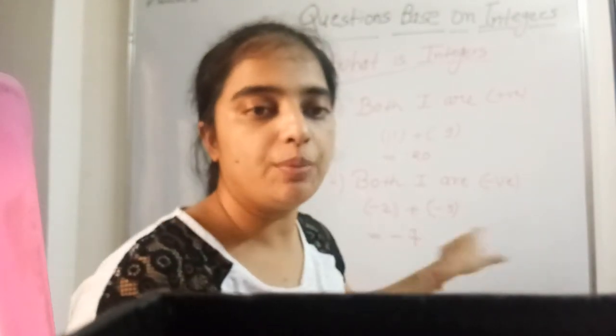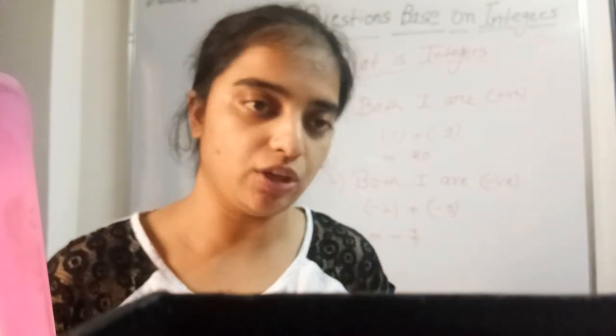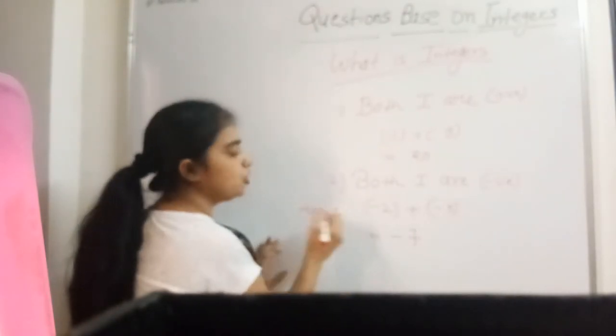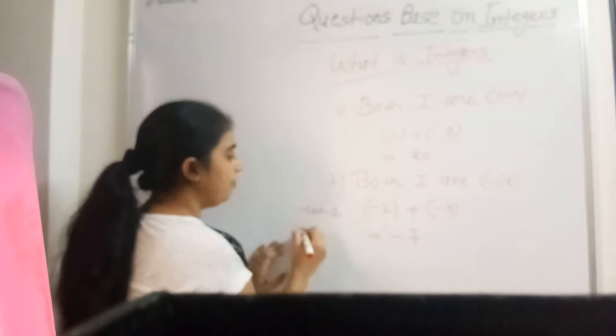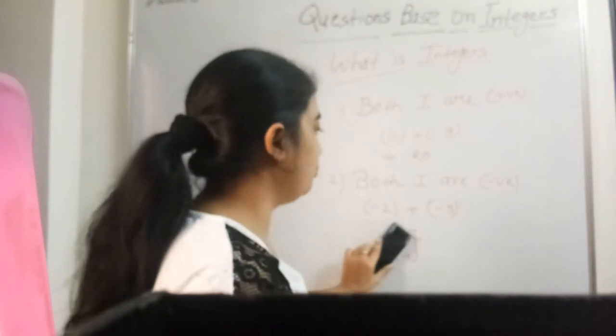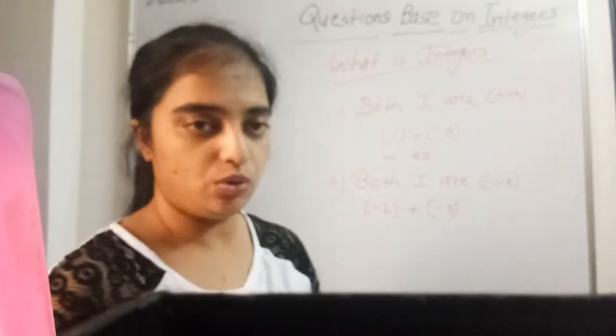Maximum problem nahi hoti — jab bhi aap koi bhi do number ko add karo, like minus 100 and minus 2, kya ho jaega? Minus 102. Agar main kahun minus 1000, aur usko add kijiye minus 4 se — the answer is minus 1004. Jab bhi aapko kisi do negative number ko add karte hain, to unka jo answer hota hai, woh bhi ek negative integer hota hai.